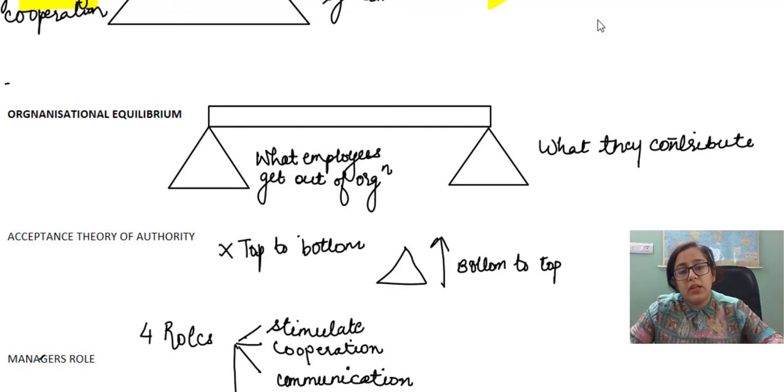So he says that people working in the organizations have two roles. One is the organizational role and the other is the personal role. As long as the personal roles get fulfilled by their contribution to the organization, people feel happy to contribute. They stay in the organization longer.